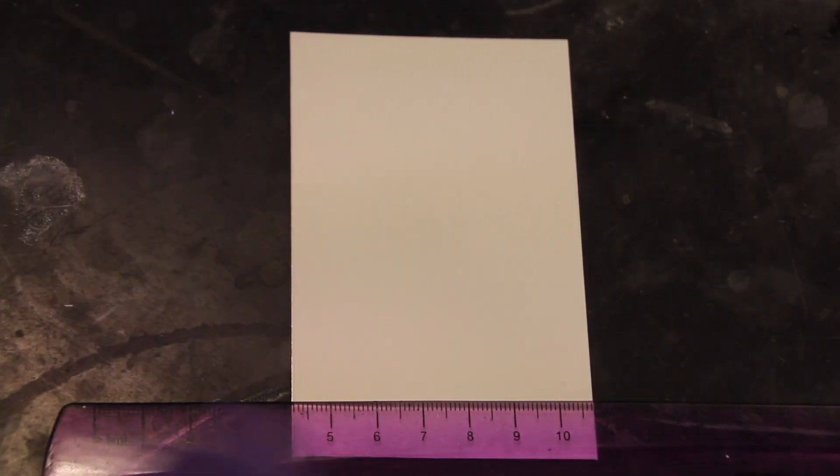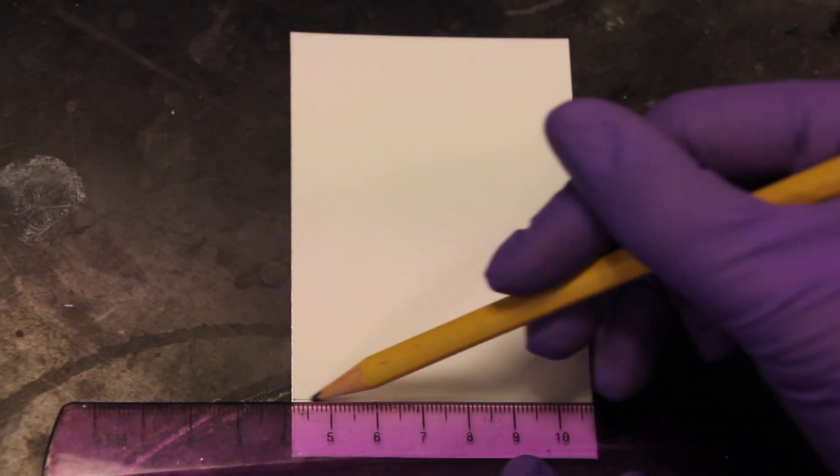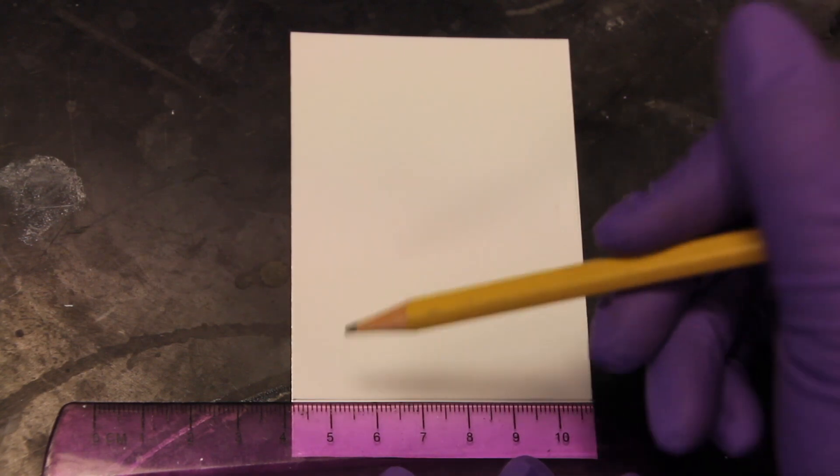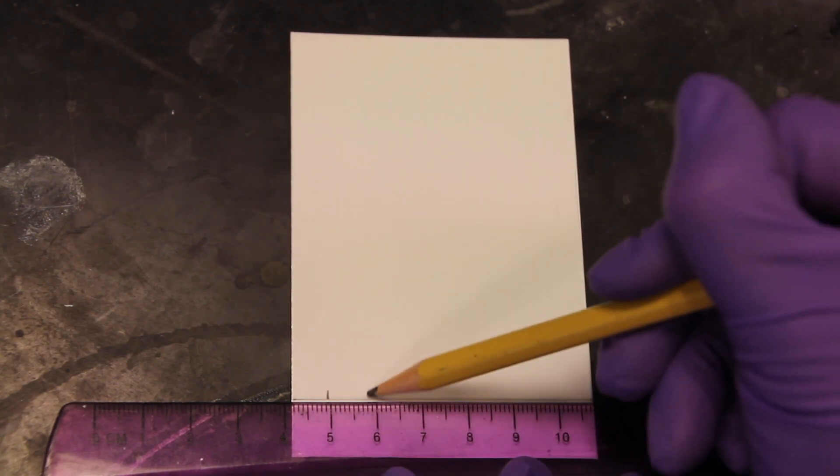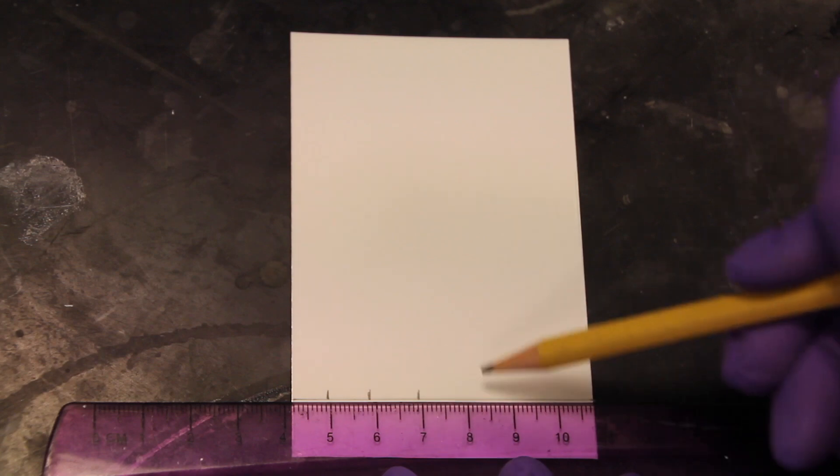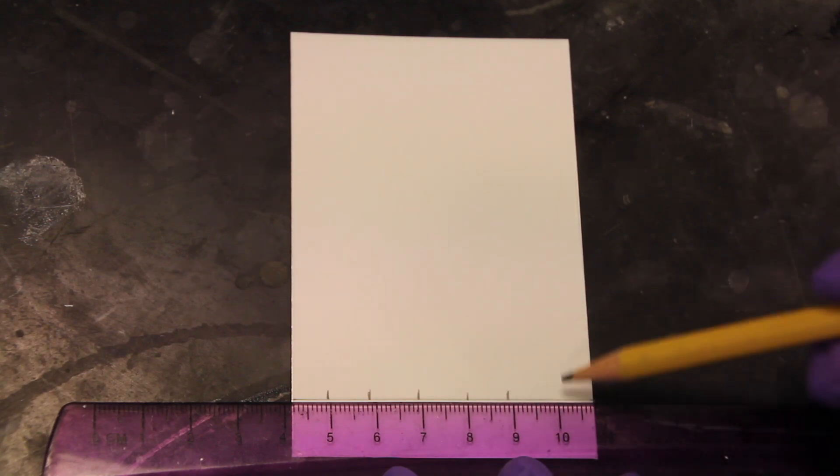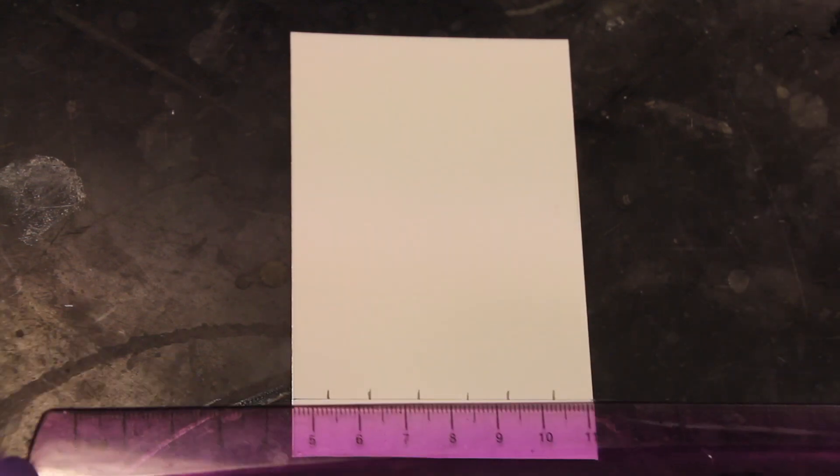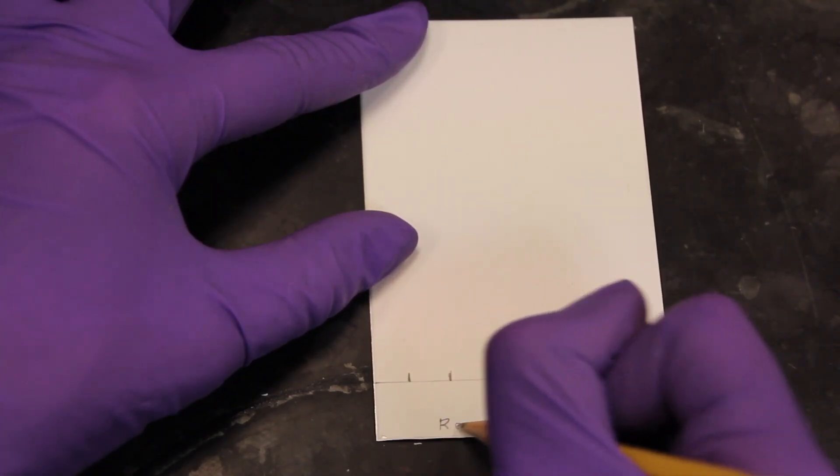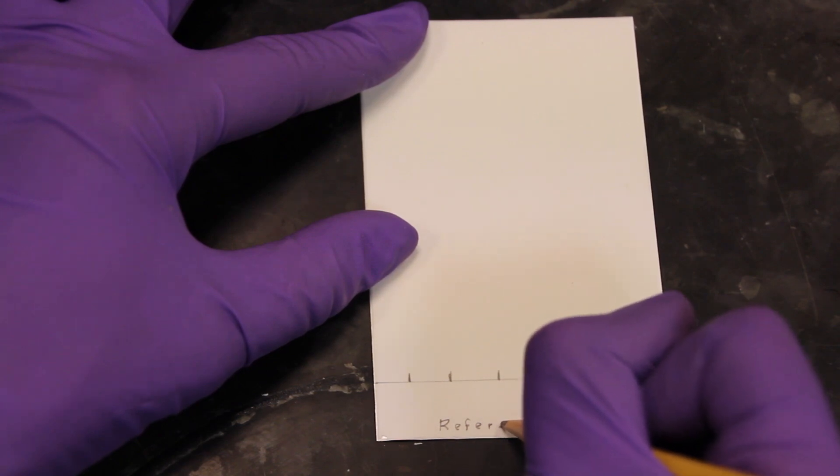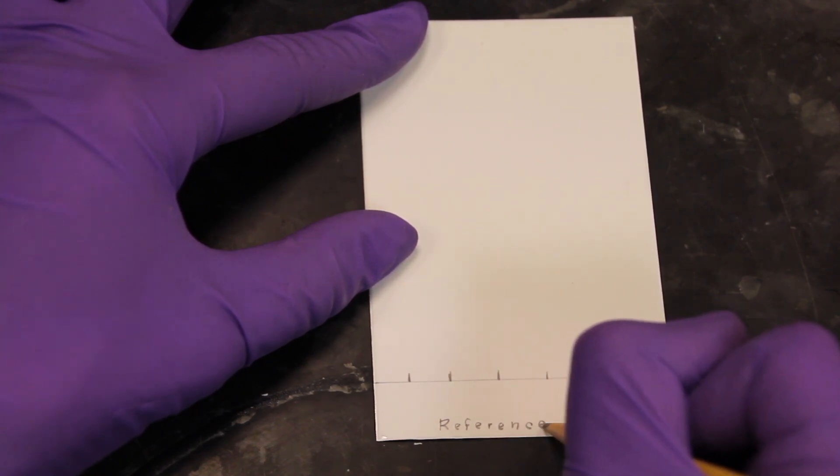To prepare your TLC plate, begin by using a lead pencil to lightly draw a line across the width of the plate, making it at least 1 cm from the bottom. Do not disturb the silica gel coating while doing this. Next, use a cm ruler to mark off 6 spots on this line at 1 cm intervals. The first spot should be approximately 0.6 cm from the edge. These points will be a guide when spotting the samples.